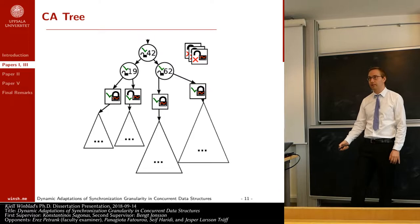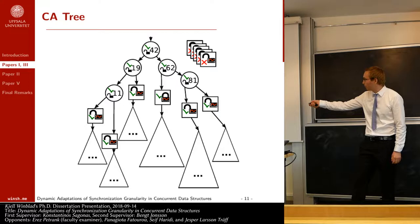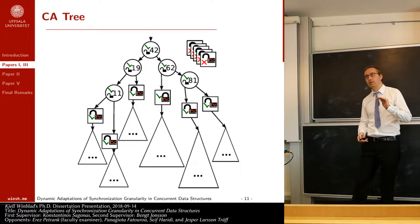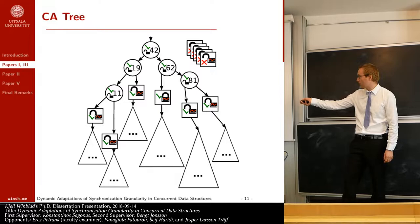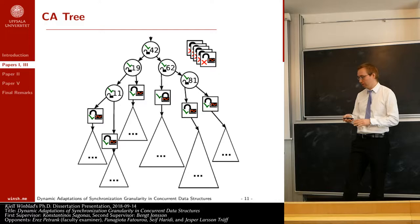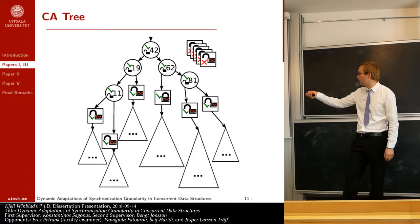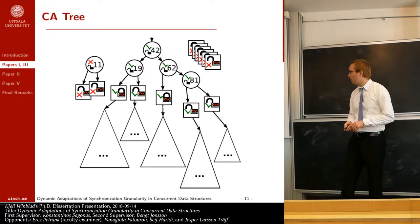Now the data structure has more fine-grained synchronization granularity. If contention remains high, this process continues and the data structure becomes progressively more fine-grained. At some point, contention may drop in part of the tree — for example in the leftmost base node — and the statistics counter there gradually decreases until a threshold for a low-contention join is reached, joining that sequential data structure with its neighboring one into a new coarser base node, replacing the corresponding routing node.